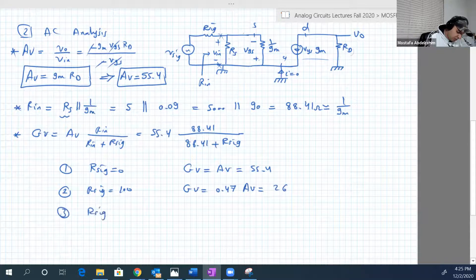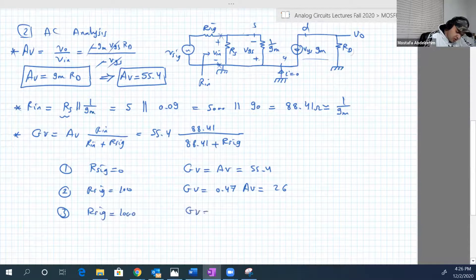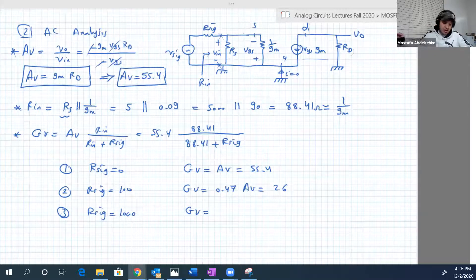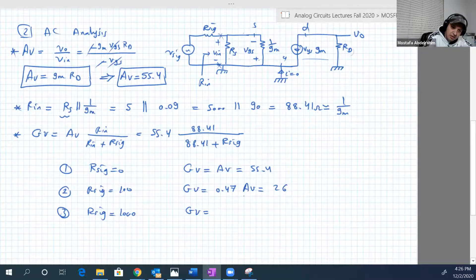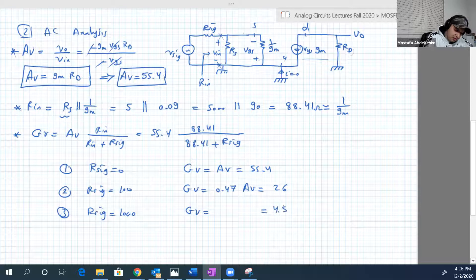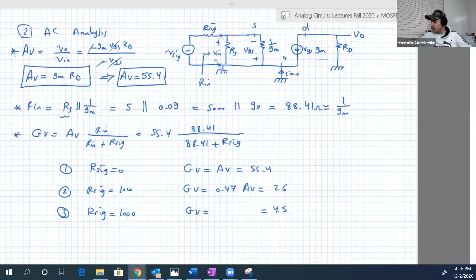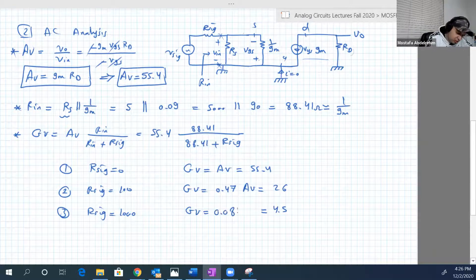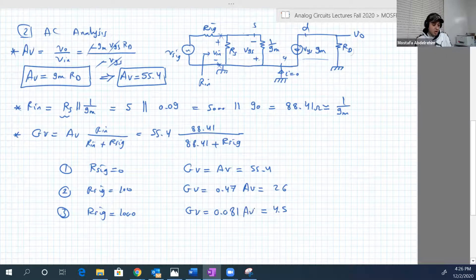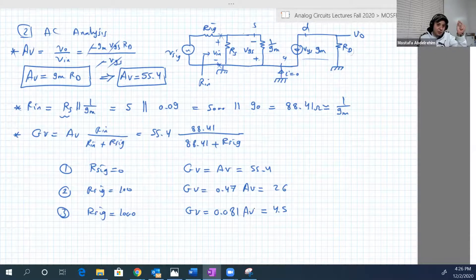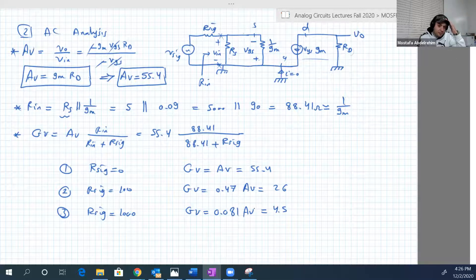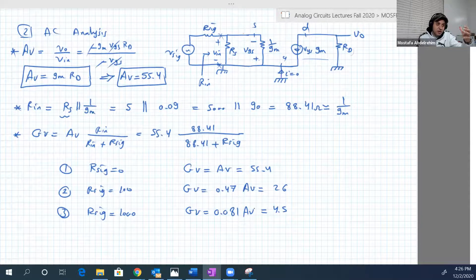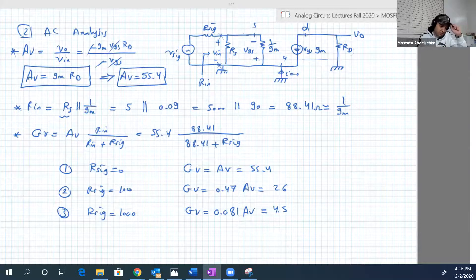Number three, R signal equal to 1000, GV now will be very small. So this will be 4.5, only 4.5. Or if we are interested in the ratio itself, it is 0.081 AV, very small. So because of R signal is just 1 kilo ohm, the amplification has reduced from 55 to 4.5, around 10 times, 11 times small.